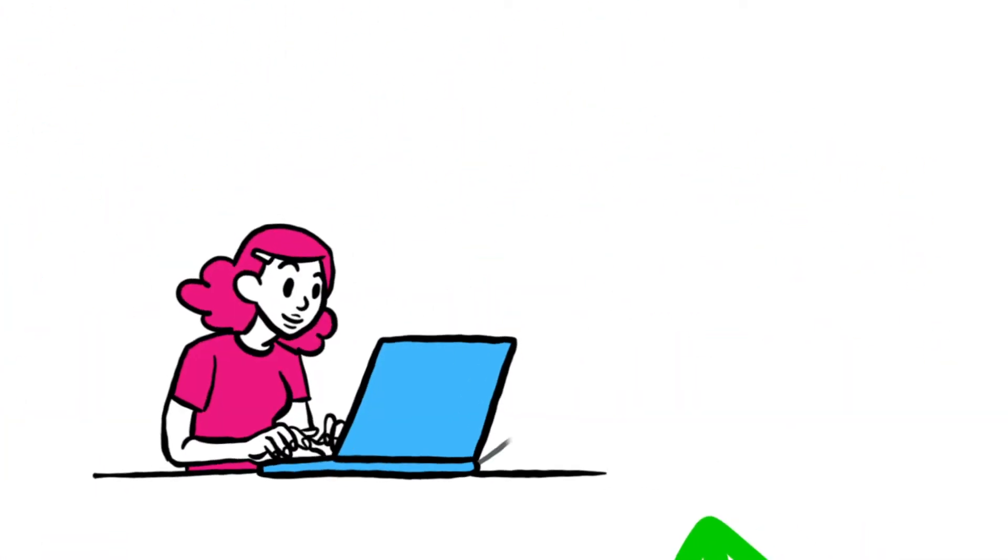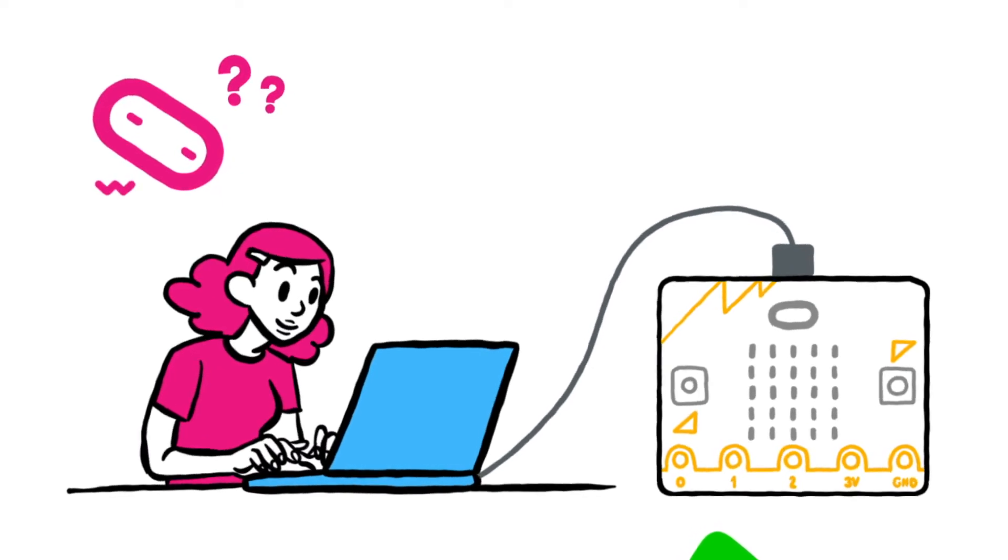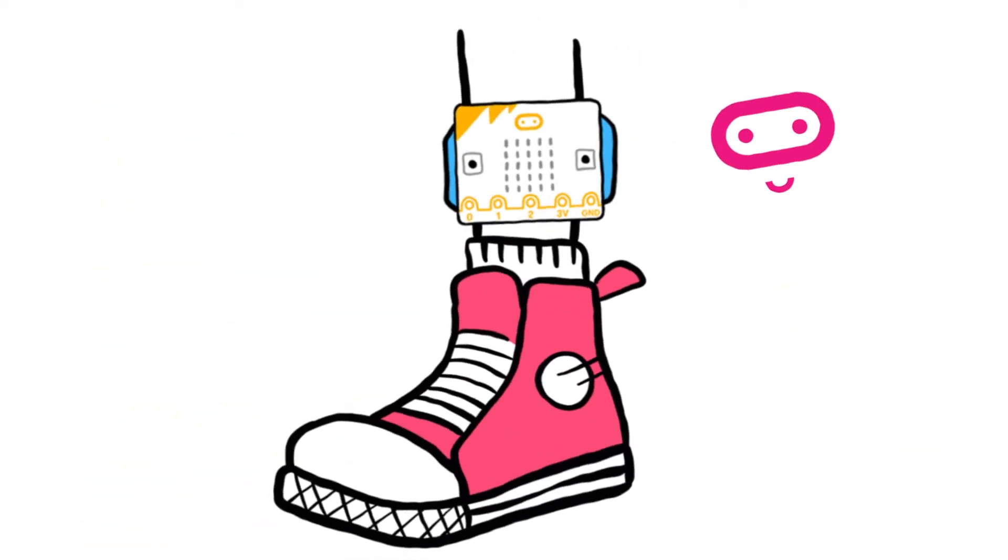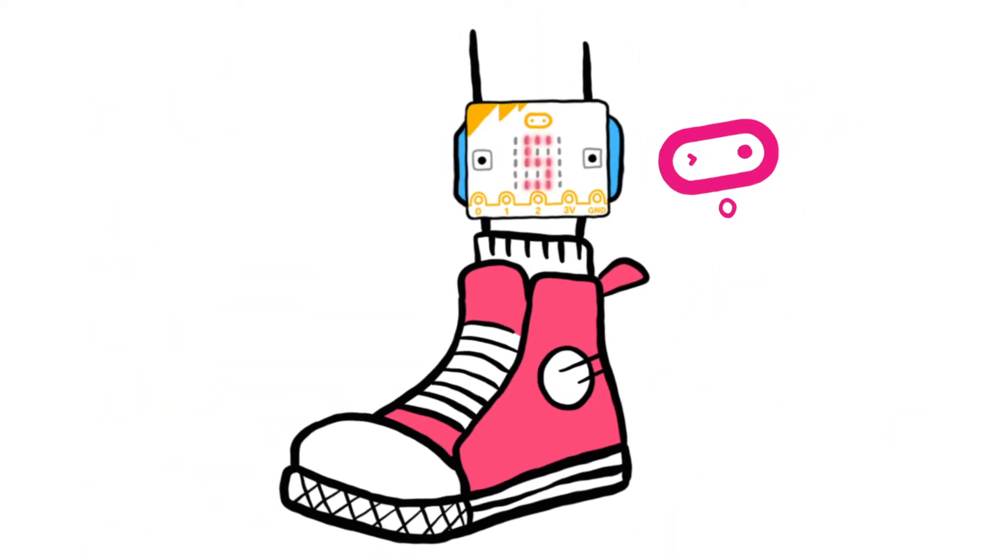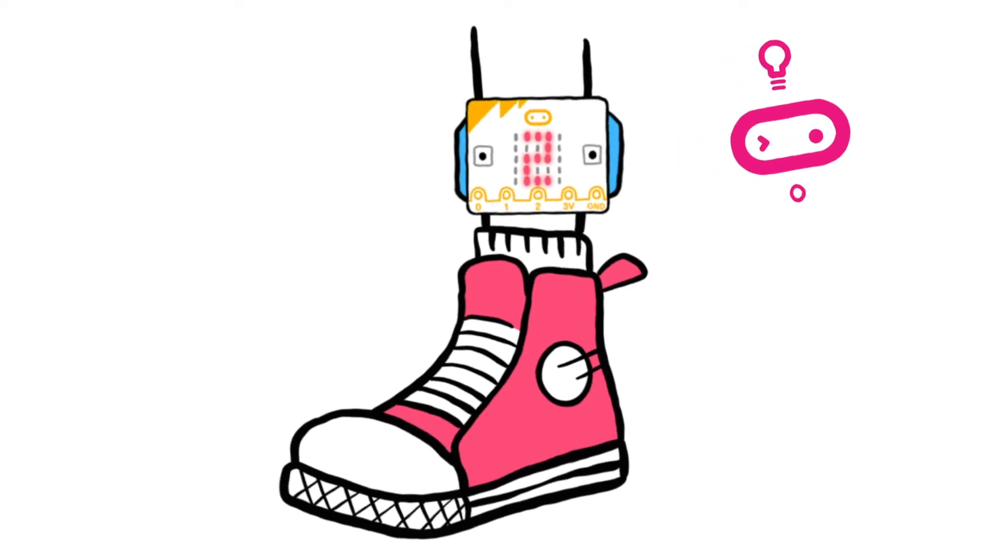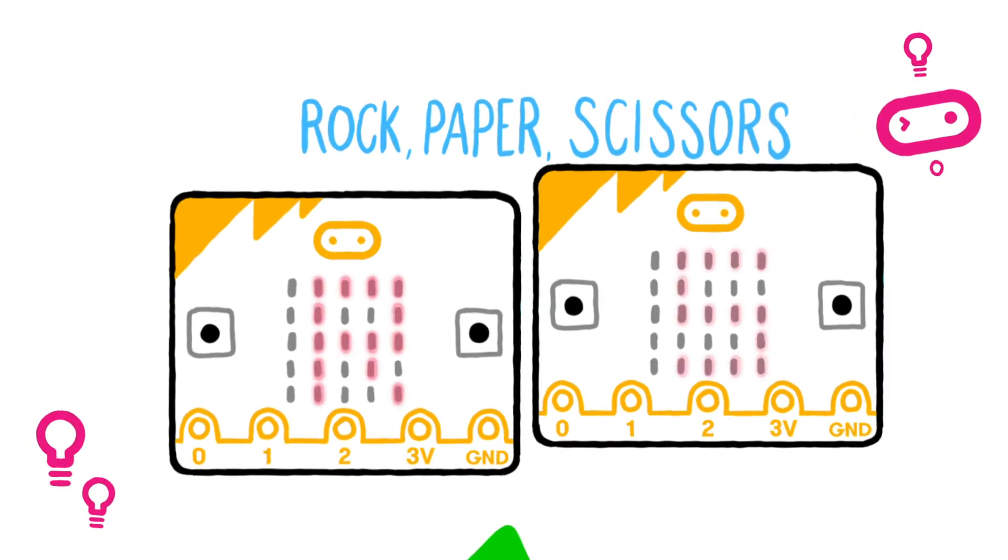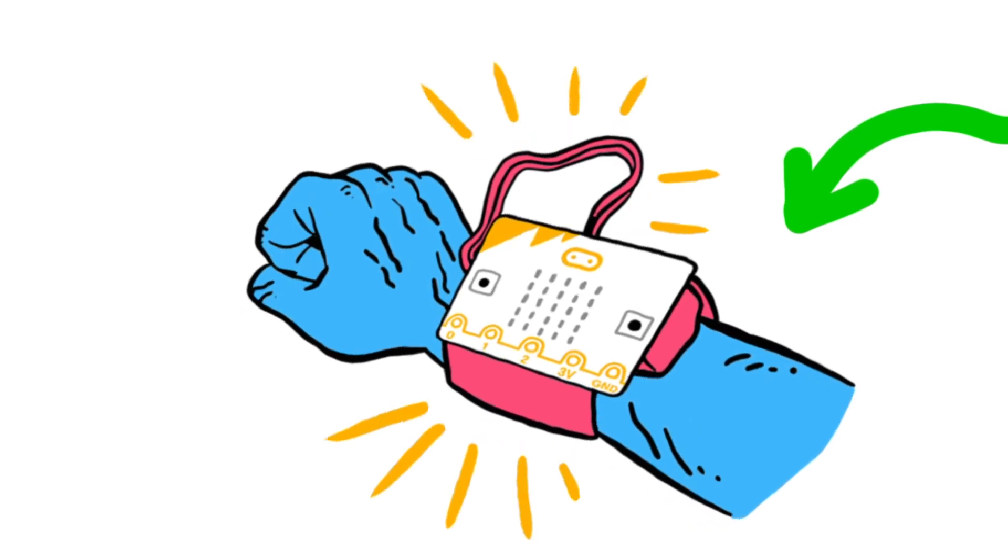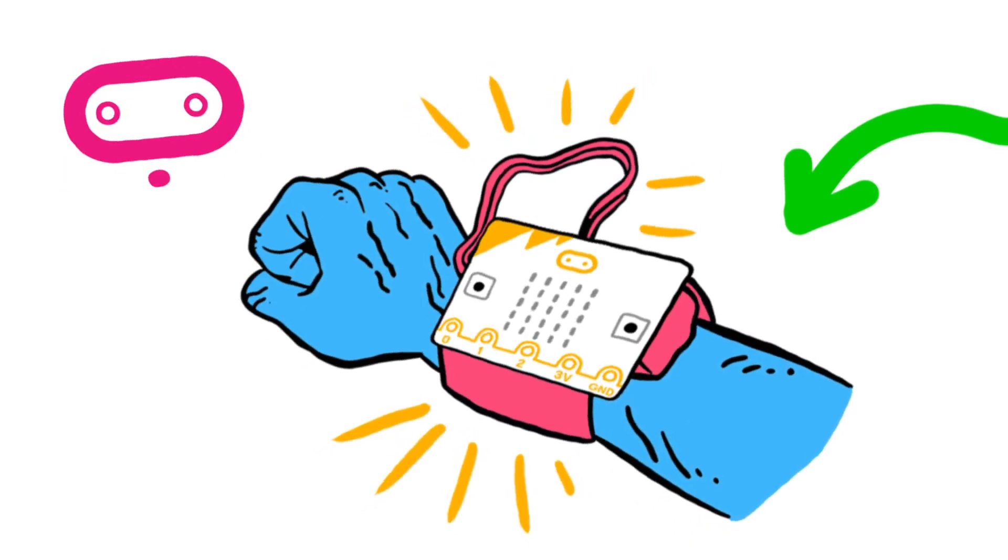You can program the accelerometer on your micro:bit to create projects like a step counter, where it senses the movement of your steps and counts how many you take. You can also design and build games that respond to motion, or make a fall alarm to signal if a person has fallen over and needs help.